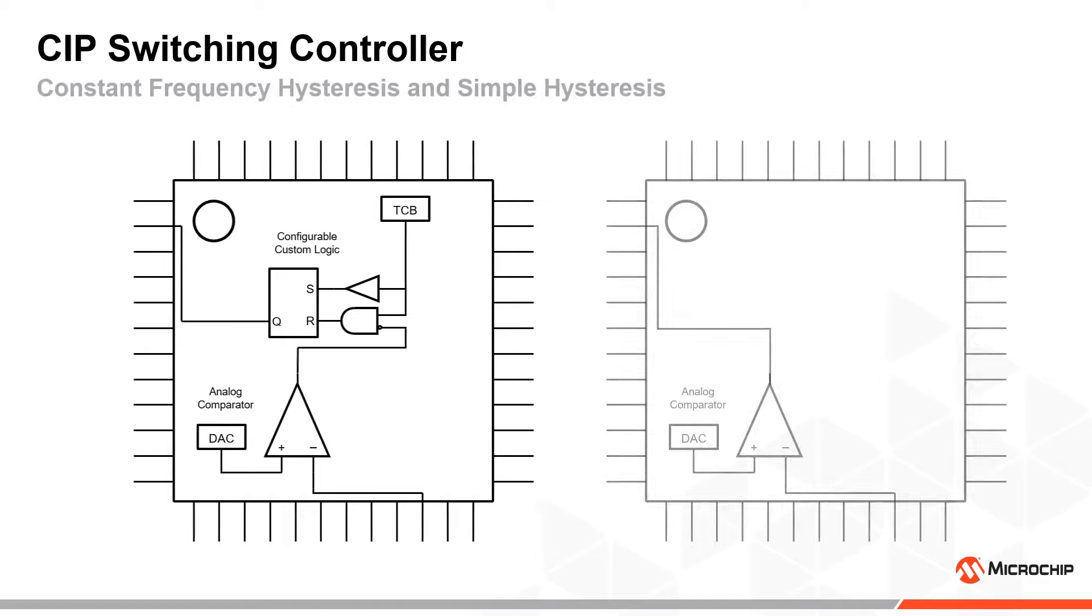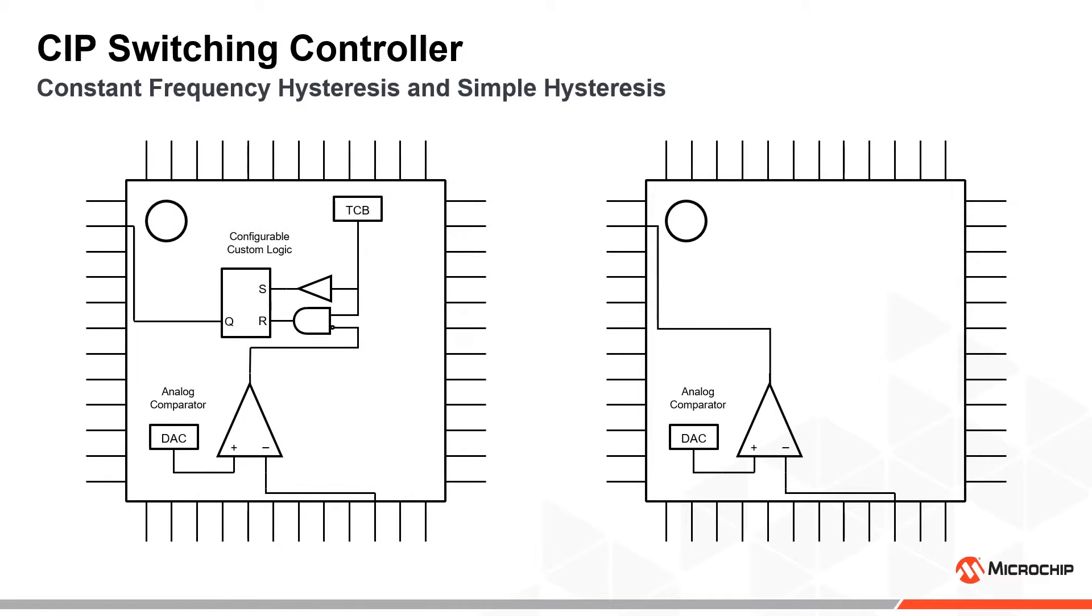The controller can be simplified even further if we remove the timer using only the comparator to switch off the transistor when the voltage exceeds the threshold voltage. This solution, however, will not have a fixed switching frequency. This will have an effect in regards to efficiency and voltage ripple.